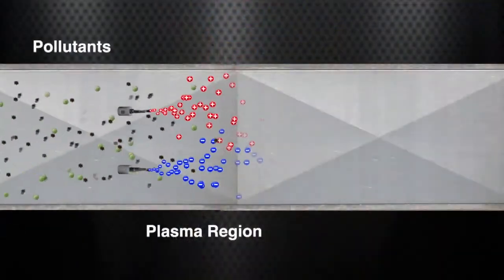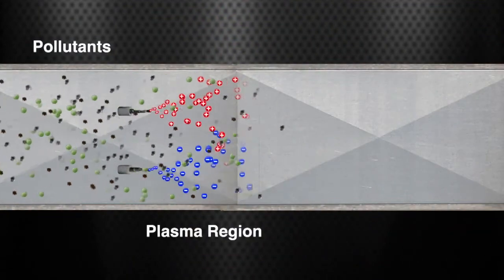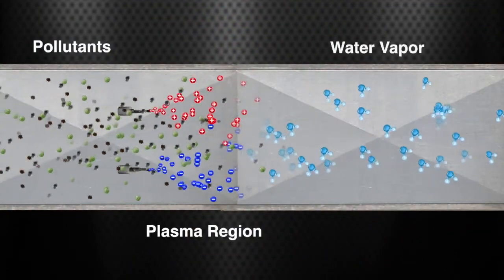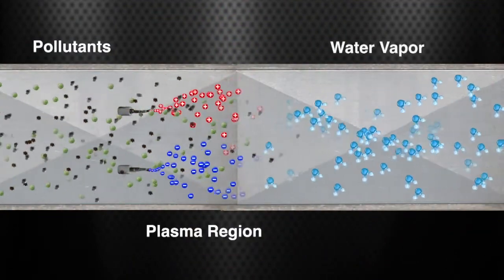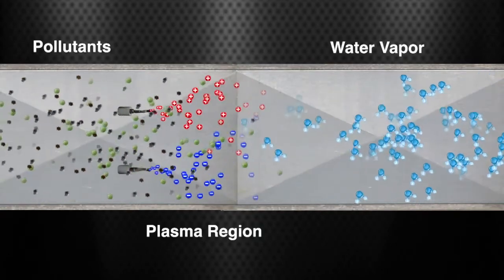When these ions are injected into the airstream, creating a plasma region, they break down passing pollutants and gases into harmless compounds like oxygen, carbon dioxide and water vapor.